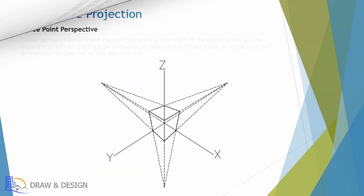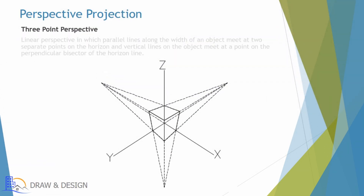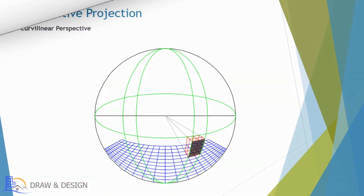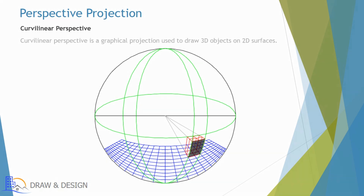Three point perspective: a drawing method in which parallel lines along the width of an object meet at two separate points on the horizon, and vertical lines on the object meet at a point on the perpendicular bisector of the horizon. Curvilinear perspective: a graphical projection used to draw 3D objects on 2D surfaces.